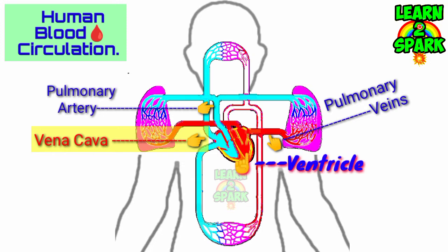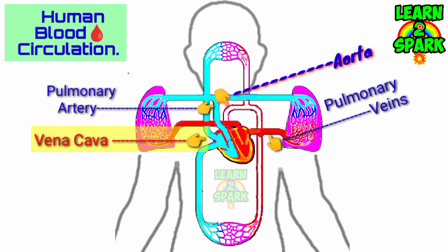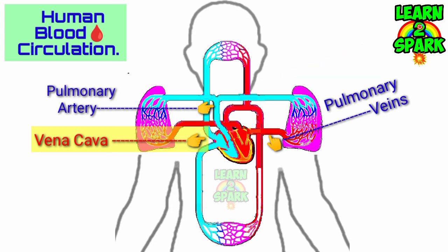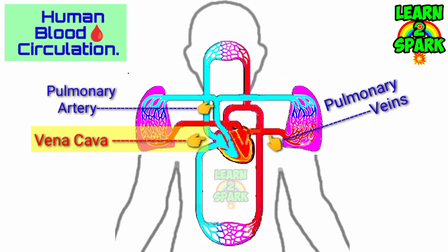This oxygenated or pure blood is carried back to the left auricle of the heart by the pulmonary veins. From the left auricle, blood flows into the left ventricle, and from there it is pumped into the aorta — the largest artery in the body. The aorta divides further to supply oxygenated blood to all body tissues through the capillaries, where it gets deoxygenated and comes back to the right auricle, completing one round of circulation.